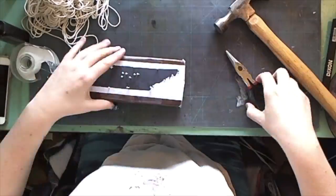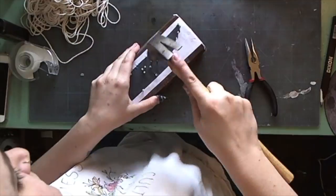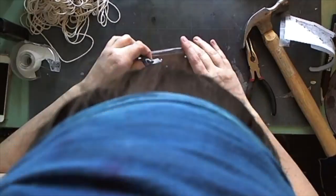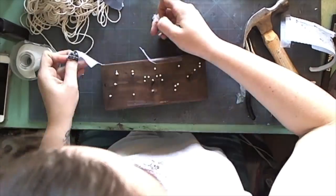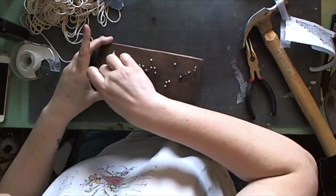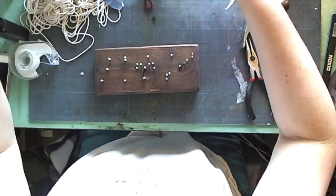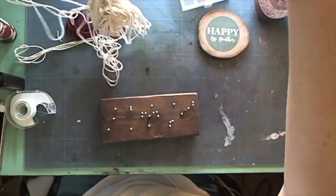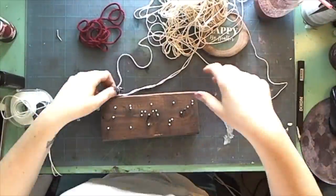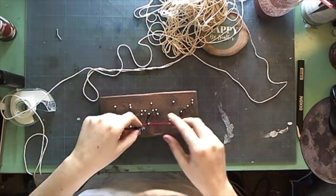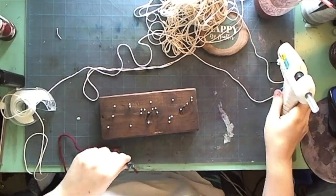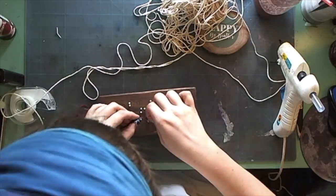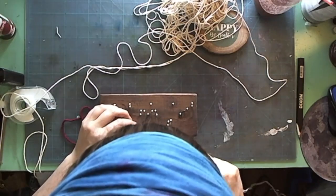After you're done with your silhouette, it's time to tear off the paper and get to wrapping our string. So I start the string by adding a dab of hot glue and then wrapping the end of the string around one nail, and then I'm just gonna go around the whole heart and wrap the string around each nail one time.